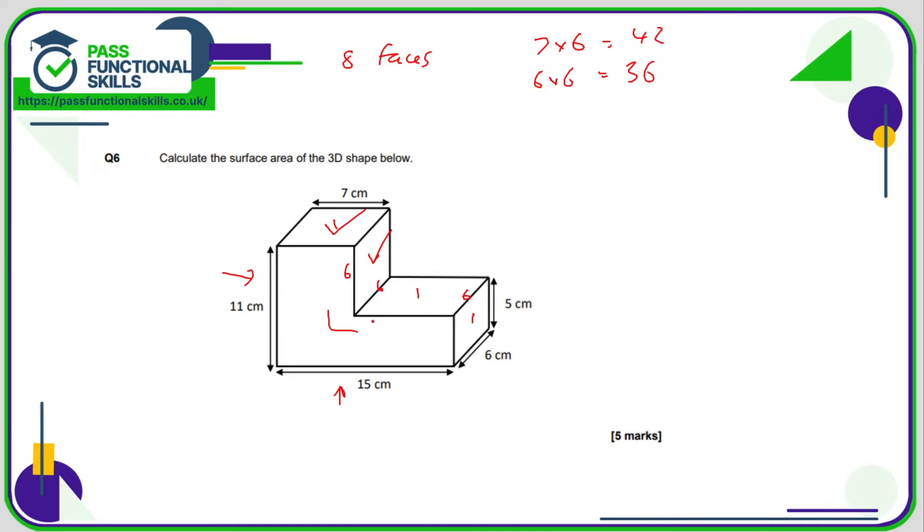This rectangle here, well this is a dimension of 6, and this length here is going to be 15 subtract 7, and 15 minus 7 is 8, so that is going to be 8 times 6 which is 48. So we've ticked that one off as well. This one's not too bad, that's a 5 times 6 which is a 30. We also got this side here, so that's 11 multiplied by 6 which is 66.